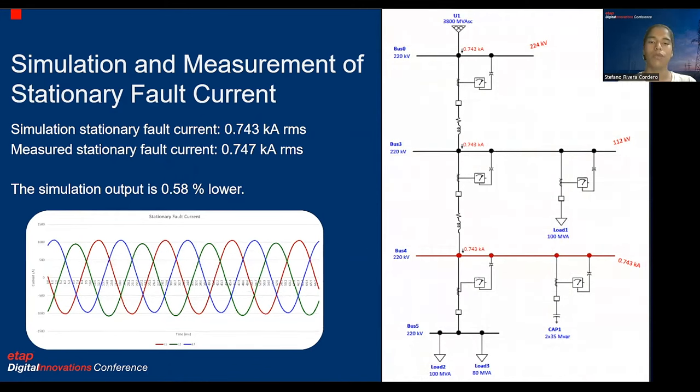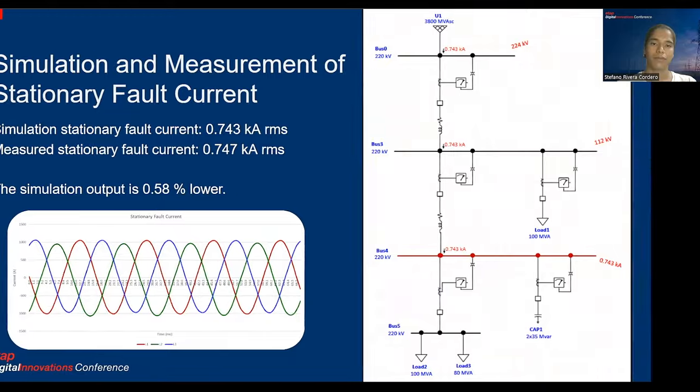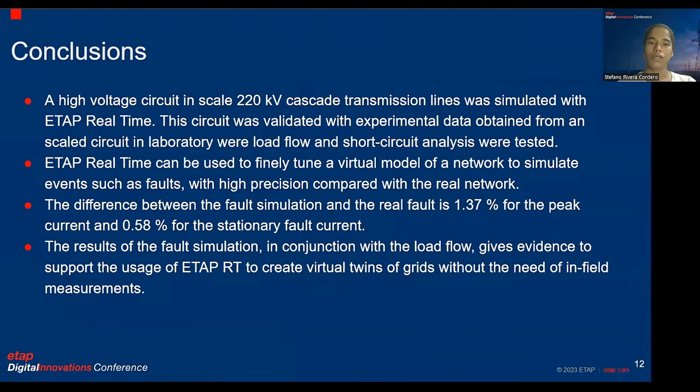In conclusion, a high voltage circuit in scale 220 kilovolt cascade transmission lines was simulated with ETAP Real-Time. This circuit was validated with experimental data obtained from a scaled circuit in laboratory, where load flow and short circuit analysis were tested. ETAP Real-Time can be used to finely tune a virtual model of a network to simulate events such as faults with high precision compared with the real network.